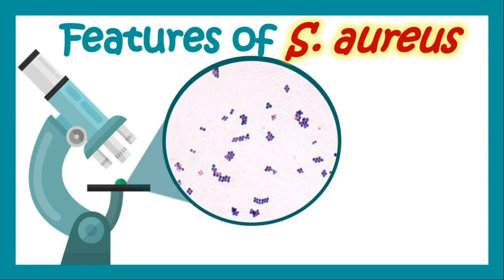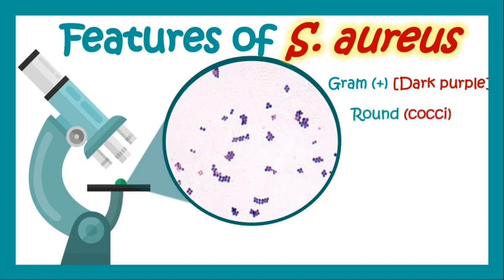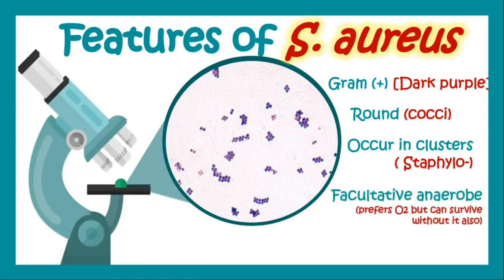Let us understand the features of Staphylococcus aureus. Under the microscope, Staphylococcus aureus appears to be a gram-positive cocci, and it appears in clusters representing the clusters of grapes. Apart from that, it is a facultative anaerobic, meaning it prefers oxygen but can survive without it. In biochemical analysis, it shows the presence of catalase as well as coagulase enzymes.